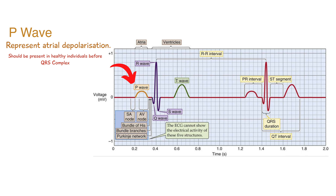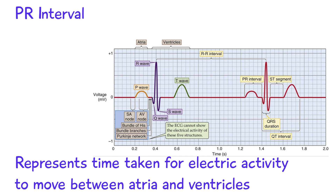We have the PR-interval. The PR-interval begins at the start of the P-wave and ends at the beginning of the Q-wave. It represents the time that's taken for electrical activity to move between the atria and the ventricles.